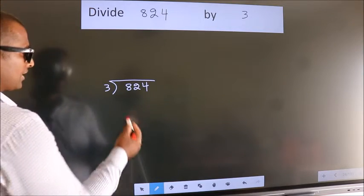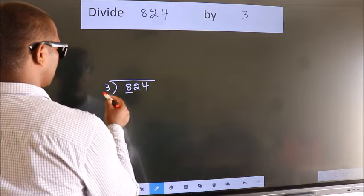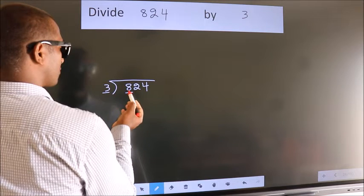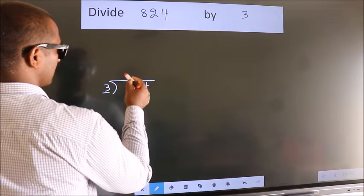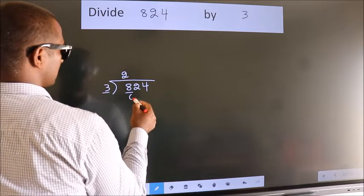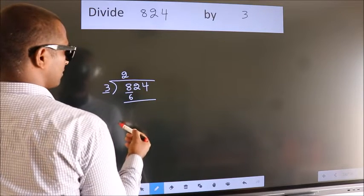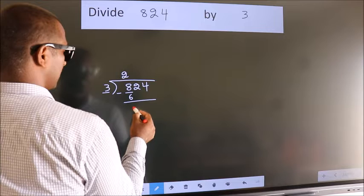Next. Here we have 8, here 3. A number close to 8 in 3 table is 3 times 2, which is 6. Now we should subtract. We get 2.